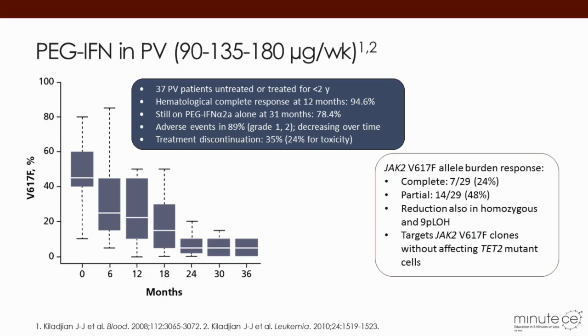A very attractive aspect of new developments in polycythemia vera therapies is the possibility of some of them — here I show interferon — being able to decrease the JAK2 allele burden, perhaps even eliminating the number of cells in the blood or bone marrow that carry the JAK2 mutation. With interferon, for example, up to 20 to 25% of patients may become JAK2V617F negative.